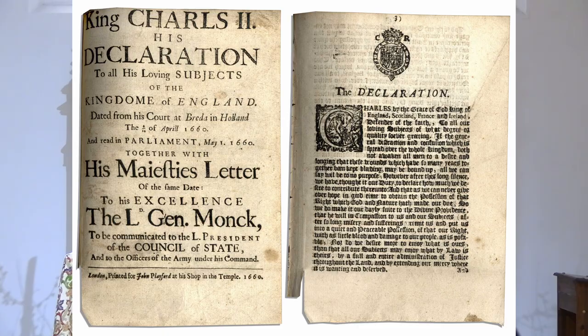Charles II had been brought up on the continent. He had had Anglican advisors, Anglican tutors, and Anglican chaplains, so he was quite dedicated at this point to the Book of Common Prayer and to the Church of England. And from Holland, he issued what's known to history as the Declaration of Breda — B-R-E-D-A.